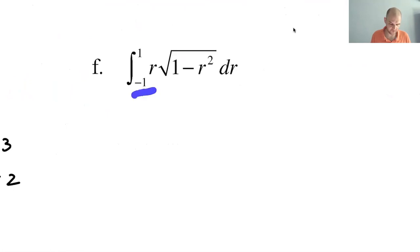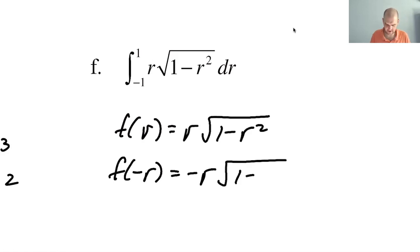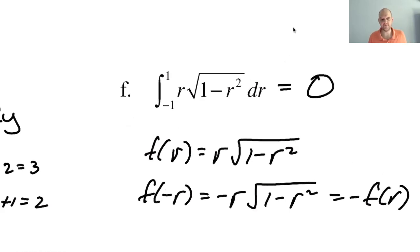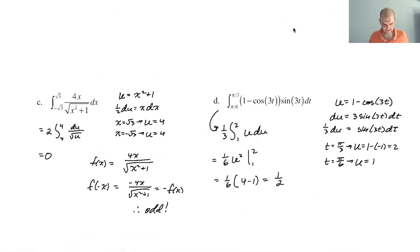All right, symmetric bounds. I'm not getting fooled again. I think this is probably odd. It's either odd or it could be even. Either way, that would be helpful. f of r is r radical 1 minus r squared. f of negative r is negative r radical 1 minus negative r squared is just r squared again. This is the negative of f of r. This is odd. This is zero. Don't get fooled multiple times in the same video. That's a rule.